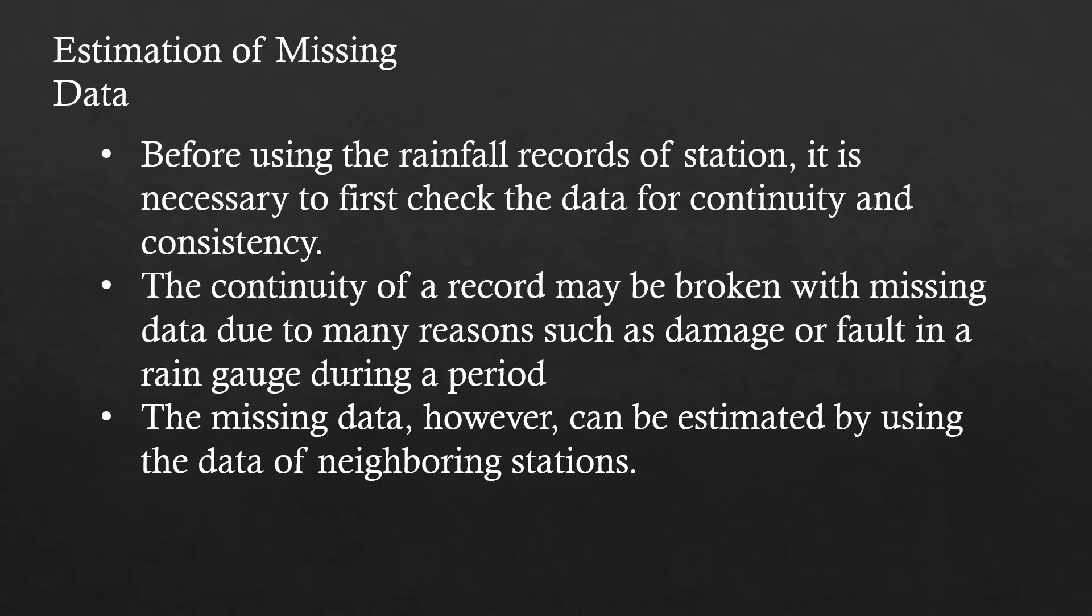In this lesson, we'll focus on the estimation of missing data. For annual precipitation at various stations, there will be cases with missing data because of damage or faults in rain gauges during a certain period. These missing data can be estimated using data from neighboring stations, but you must first check the data for continuity and consistency before applying the methods we'll discuss, to ensure justified compatibility using the different methods.